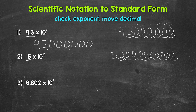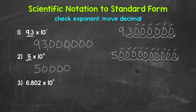Then we can fill with zeros, and that's our standard form. Let's rewrite this — we have 5 and then 10 zeros: 1, 2, 3, 4, 5, 6, 7, 8, 9, 10. Now we can put in the commas — a comma right here, right here, and right here. So we have 50 billion for number 2.